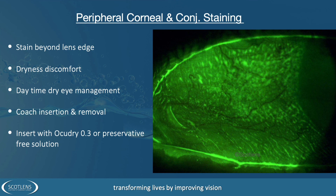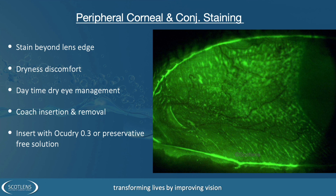Looking onto the conjunctiva beyond the cornea, in this case we can see this patient has a history of lid issues — there's a notch in the lid caused by an old meibomian gland cyst. This patient has general diffuse staining on the conjunctiva. At this point we want to move them onto preservative-free solutions and maintenance of dry eye management during the day.